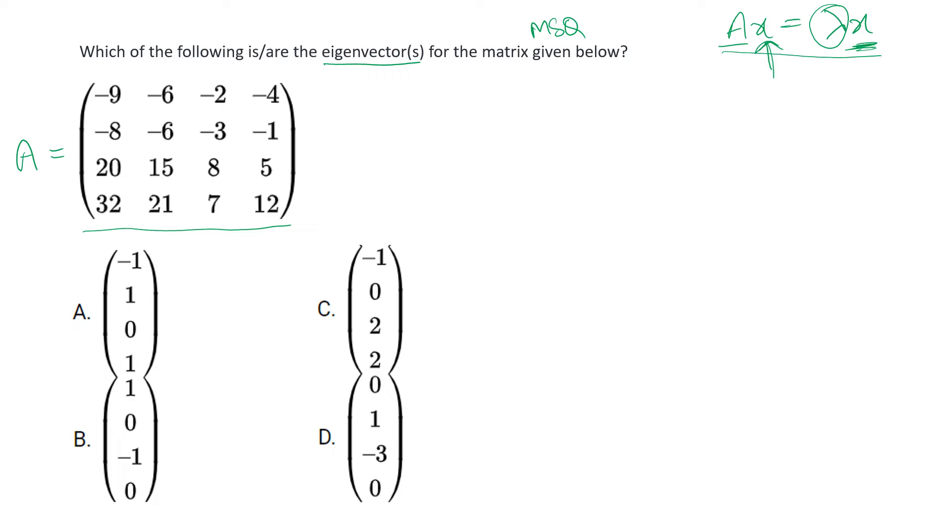Starting with the first one, A into x will give us A is our matrix and let us put x next to it: minus one, one, zero, and one. When we take this product, that would be first row multiplied with first column and then so on for the others.